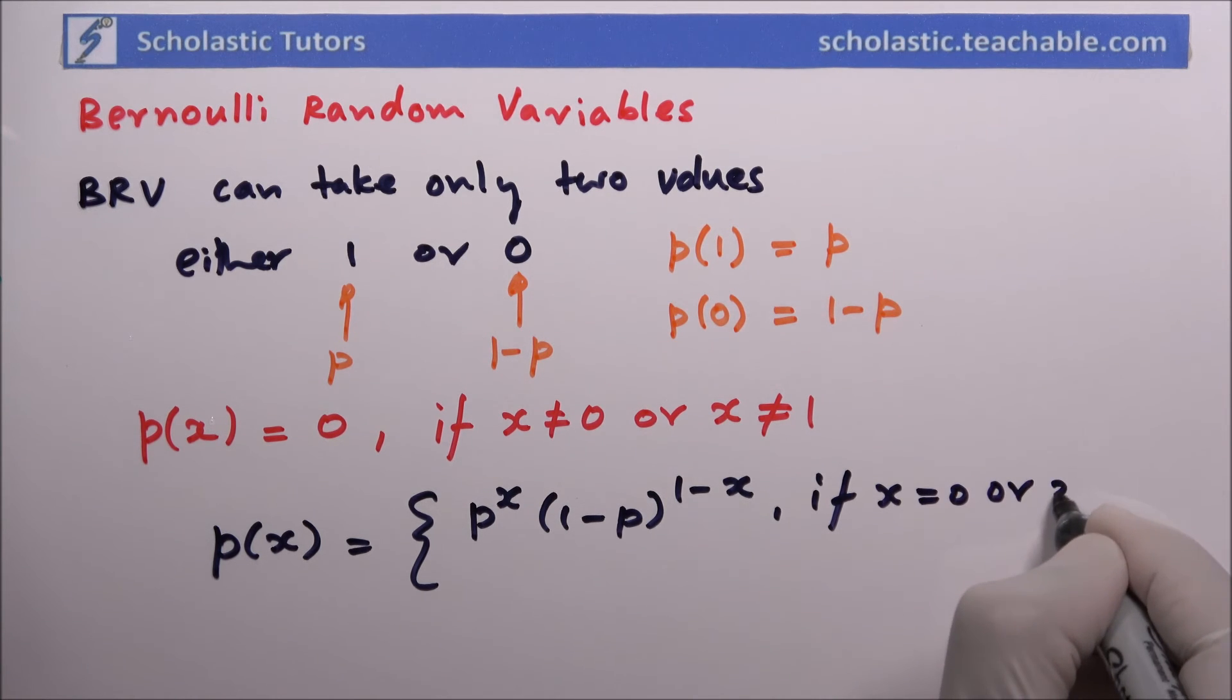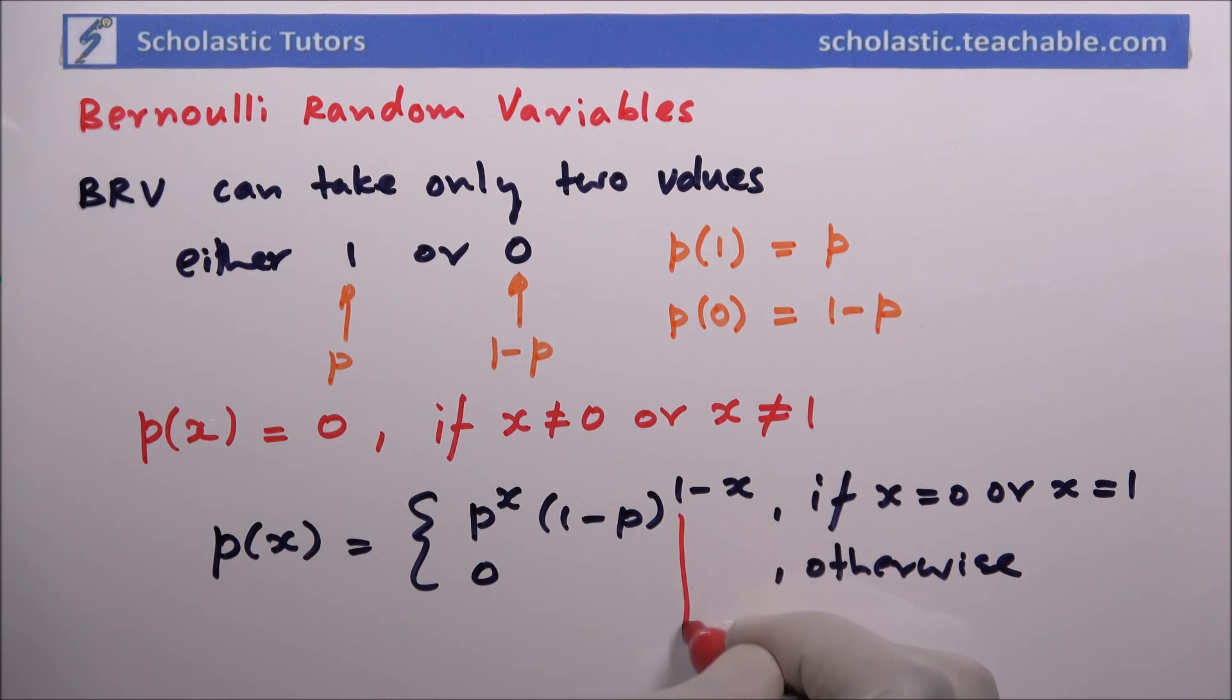Otherwise, it will become zero. You can see some resemblance of this to binomial distribution. This is basically n equal to one in the case of a binomial distribution. We will look at that in another video.